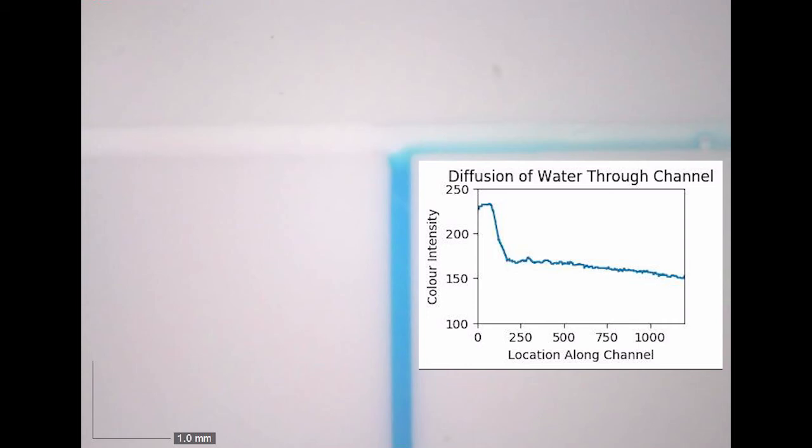We can watch this plot in real time as the water now begins to mutually diffuse along the channels. As the water begins to diffuse, a concentration gradient is formed along the channel. Areas further from the interface are less diffused while the areas closer to the intersection are highly diffused.